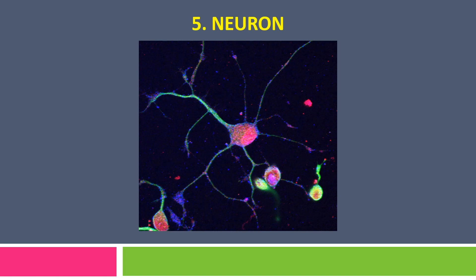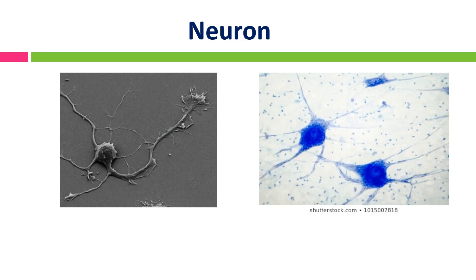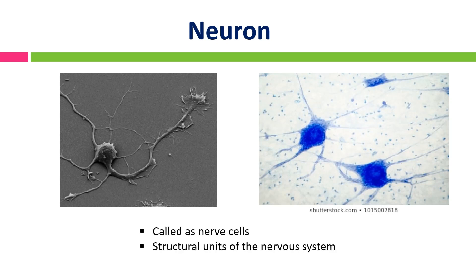Hi everyone, we are now at topic 5 on Neuron. Neuron, also called a nerve cell, is a structural unit of a nervous system. They are large, highly specialized cells that function to conduct nerve impulses from one part to another part of the body.